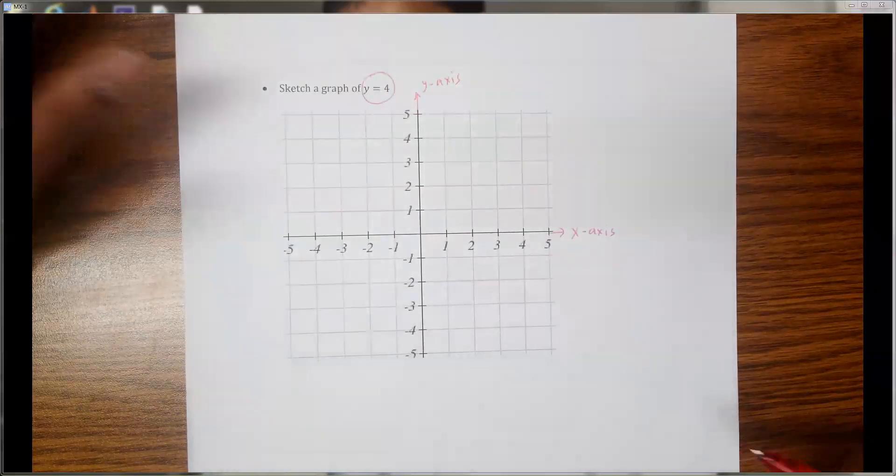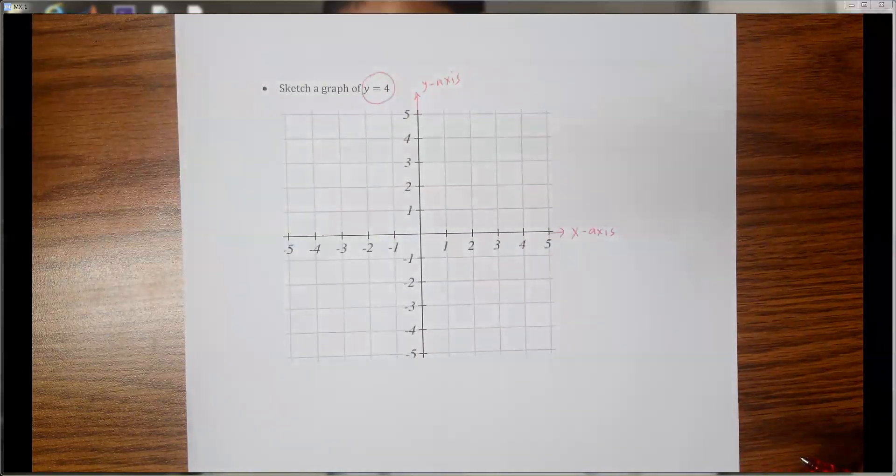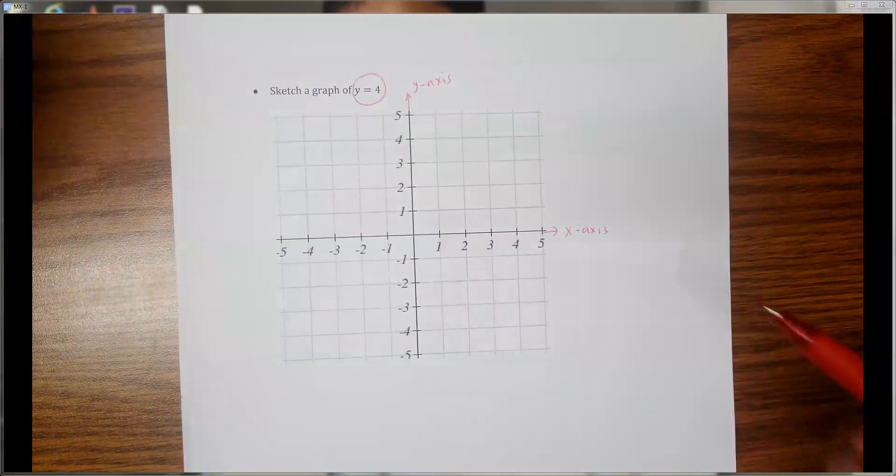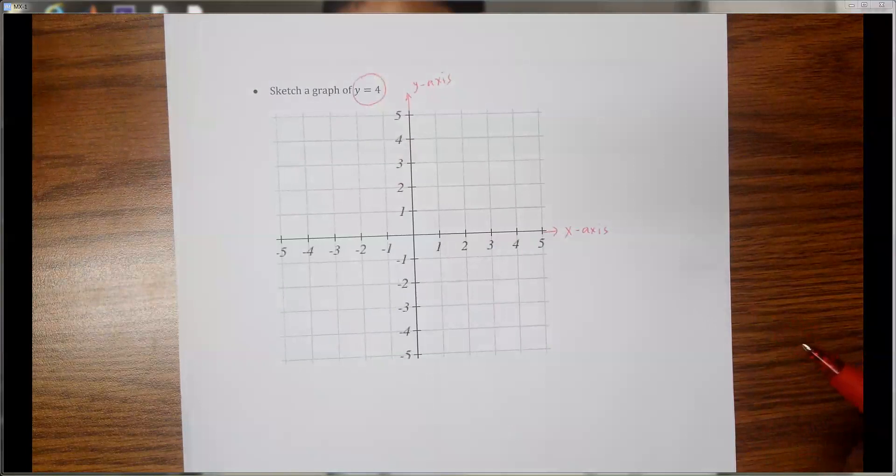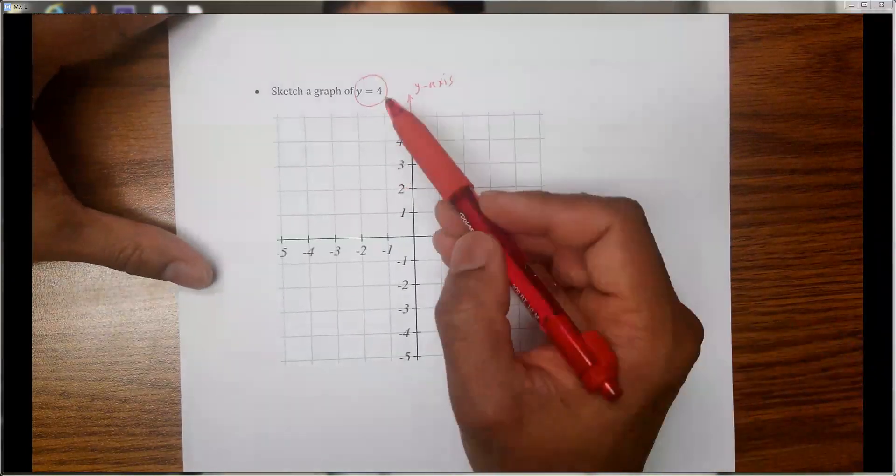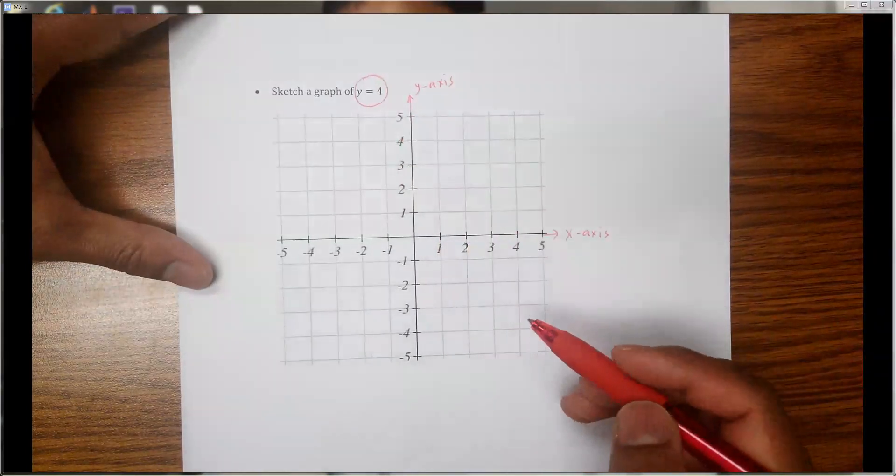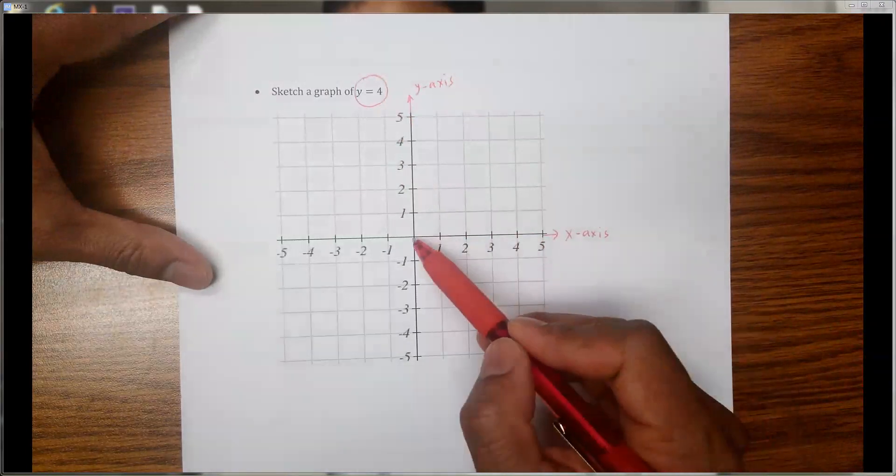So that means it's a straight line and on that straight line the value of y should always be 4. What about the value of x? The value of x could be anything. So what do we do to draw a graph for this kind of line?